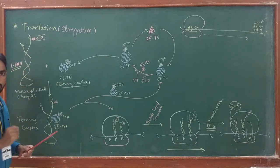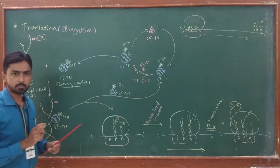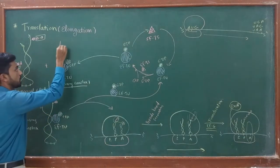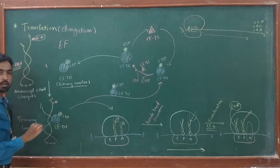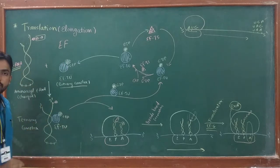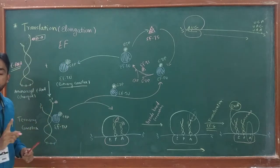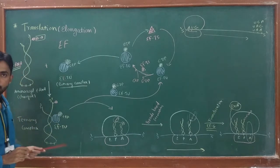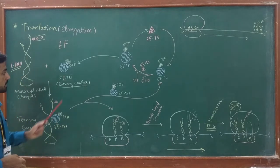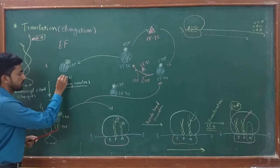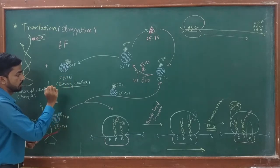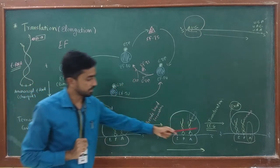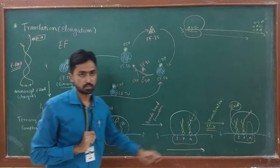For the elongation process, special types of factors are always needed, and these are called EF, or elongation factors. Prokaryotic cells require three different types of elongation factors: EF-TU is the first factor, EF-Ts is the second factor, and EF-G is the third factor.